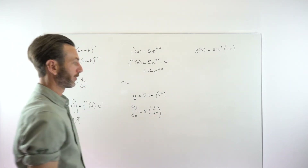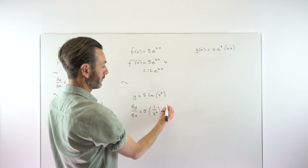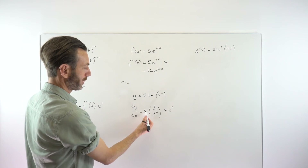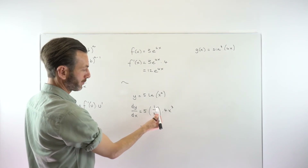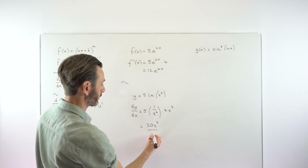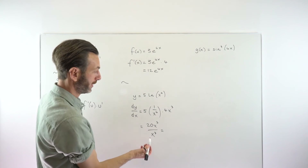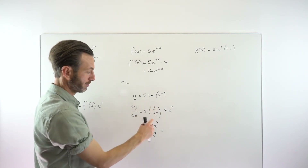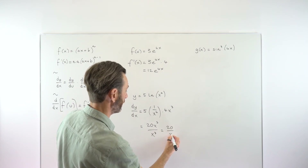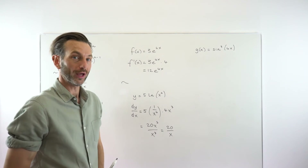We multiply by the derivative of the internal function — the u dash part — which is the derivative of x to the 4, giving 4x cubed. Multiplying everything together: 4 times 1 times 5 is 20, so we get 20x^3 over x^4. We can simplify by dividing top and bottom by x cubed, giving us 20 over x. That's basically how a log derivative works.